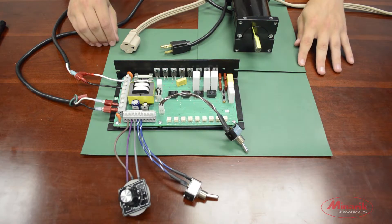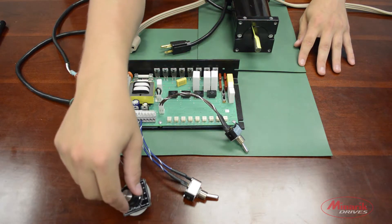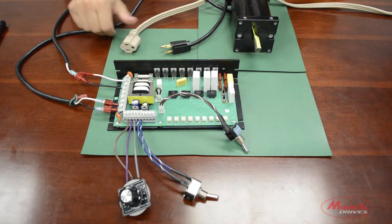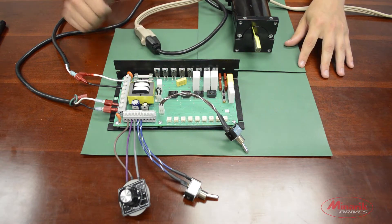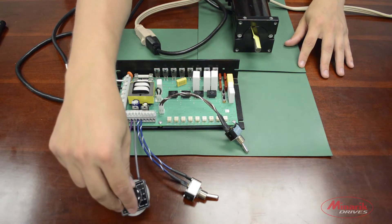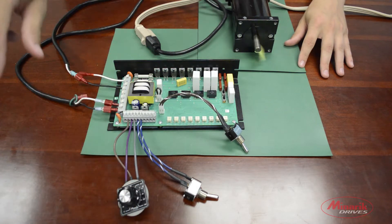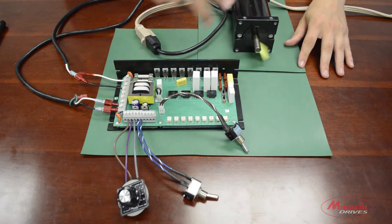Now that we've double checked all of our wiring and we've turned our main speed potentiometer down to zero, it's okay to apply power to the drive. We'll now turn the main speed pot to make sure the drive commands the motor to rotate.